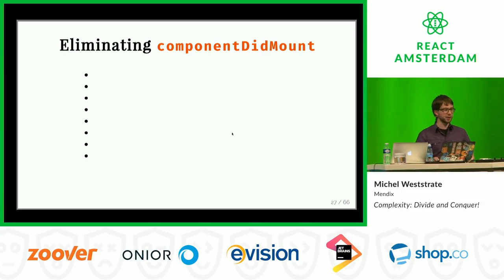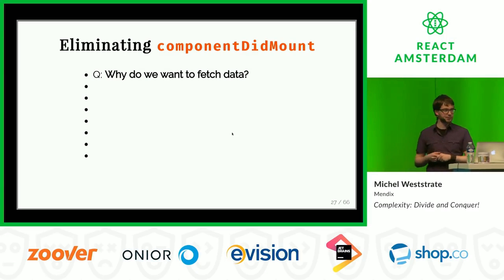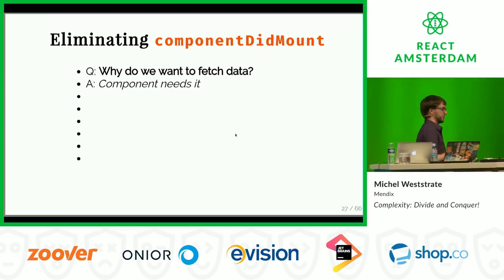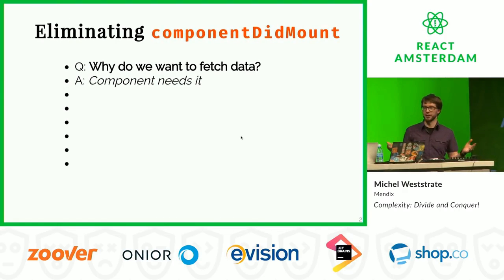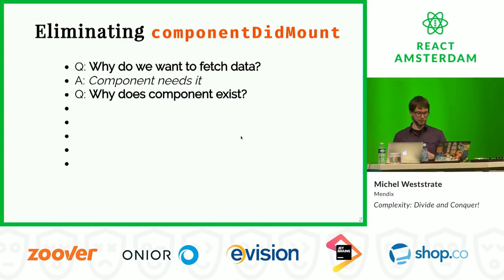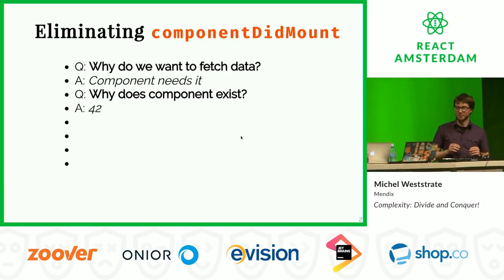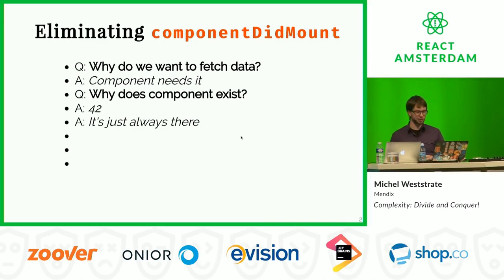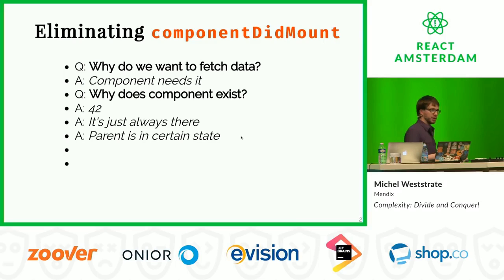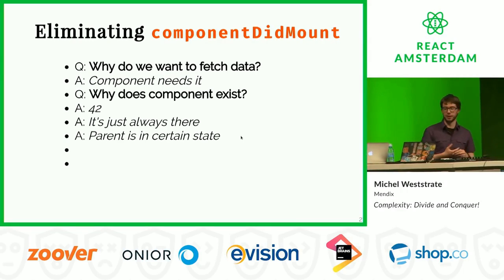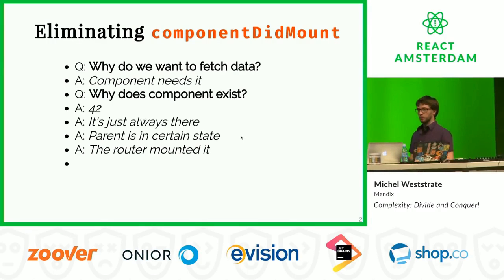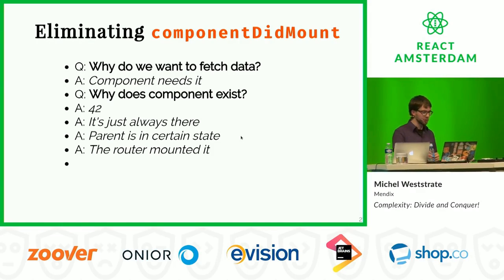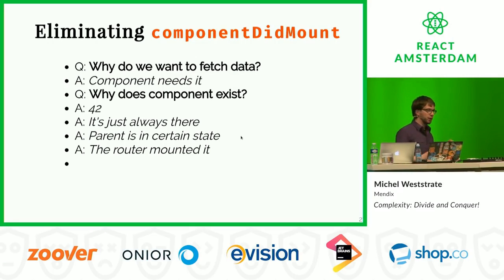We can leverage the four reactive boxes. Let's do a mental exercise: why do we want to fetch data? Obviously because our component needs it. Why is the component there? There are several reasons: it's always there as part of the application tree like top-level components; it's there because the parent is in a certain state, like to-do views rendered when there are to-dos; or the router mounted it because we navigated to a certain URL.